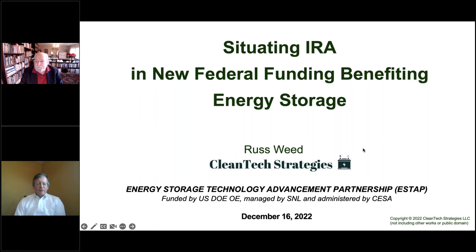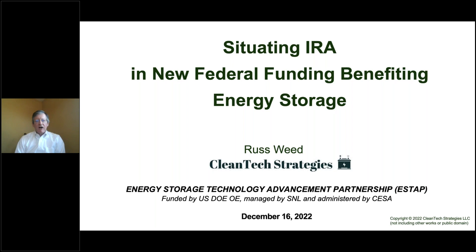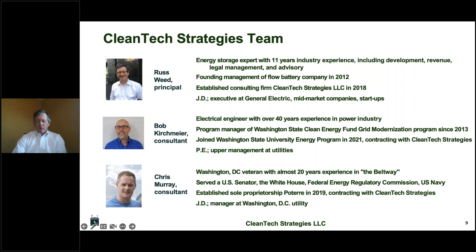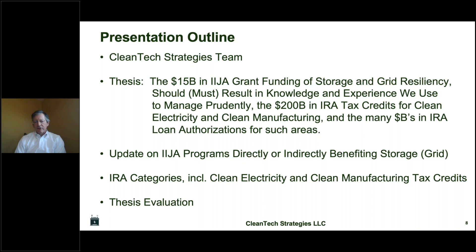Good morning, good afternoon. Russ Weed from Cleantech Strategies. The focus today is on IRA — the Inflation Reduction Act — including policy, tax credits, and loan programs. I also want to situate IRA in the overall new federal funding benefiting energy storage, which would include the Infrastructure Investment and Jobs Act, IJA, sometimes called BIL. The thesis I want to advance is that the $15 billion in IJA grant funding for storage and grid resiliency should — I would say must — result in knowledge and experience that allows us to prudently manage the $200 billion in IRA tax credits for clean electricity and clean manufacturing, and the many billions in IRA loan authorizations.